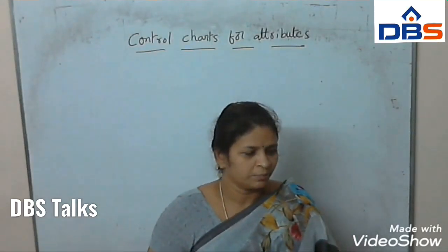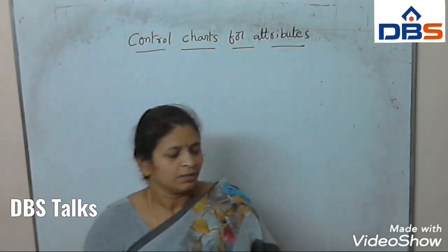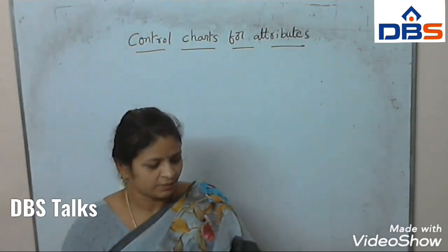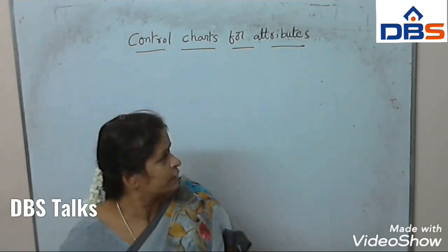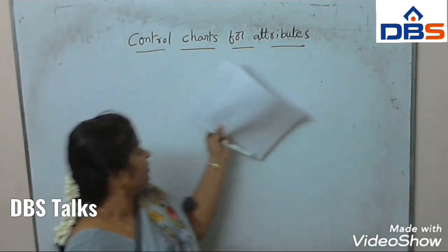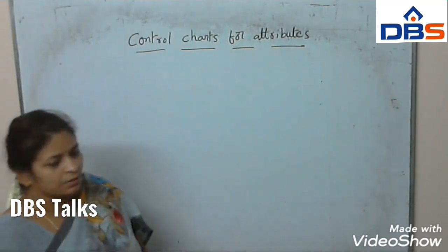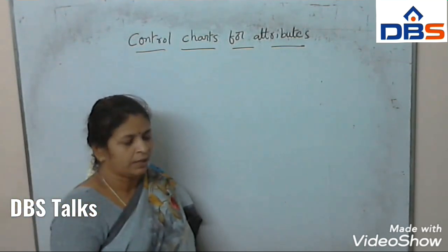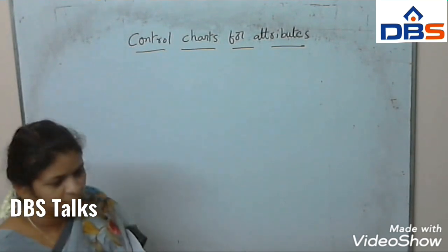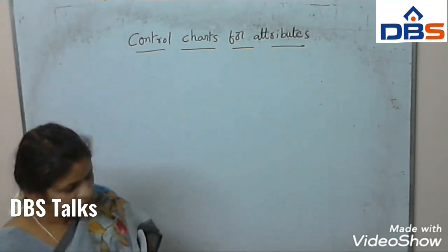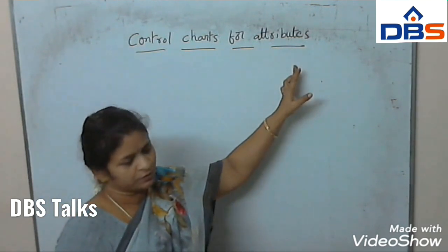Hi, this is Madhuri, Department of Mathematics, DBSIT. In the last lecture, we had a discussion about the control charts for variables. Now, I am going to discuss about the control charts for attributes. Our topic is control charts for attributes.